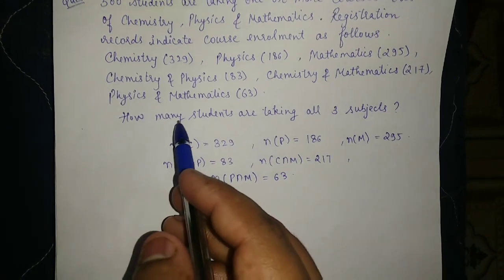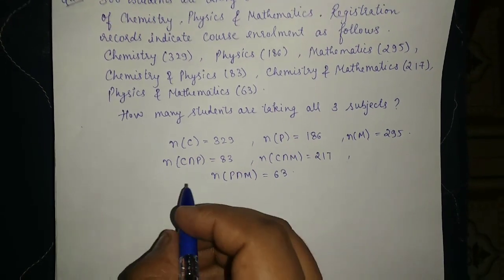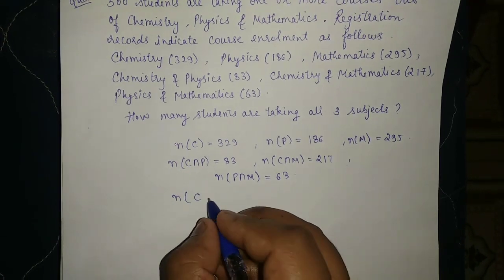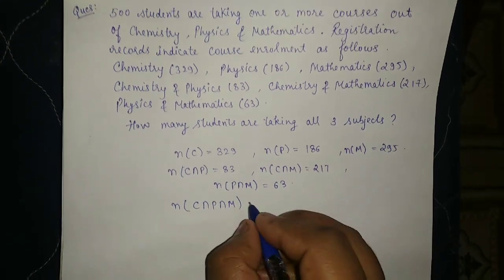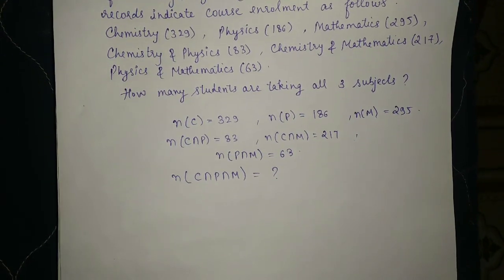And we have to find how many students are taking all three subjects. So we have to find this C intersection P intersection M.